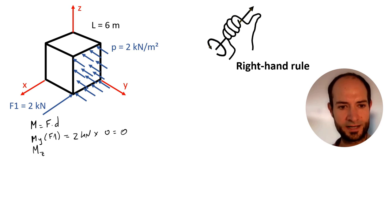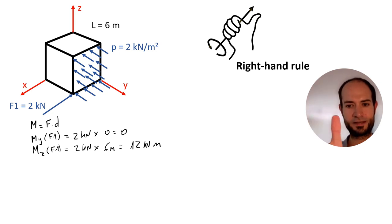And now let's see around z. We have 2 kN. Now what's the distance perpendicular from f1 to z? 6 meters, the side of the cube. That's 12 kilonewton meter. Positive or negative? Let's see. So we have f1 and then rotates, and my thumb is pointing upwards along the positive side of the x-axis. Therefore, positive.